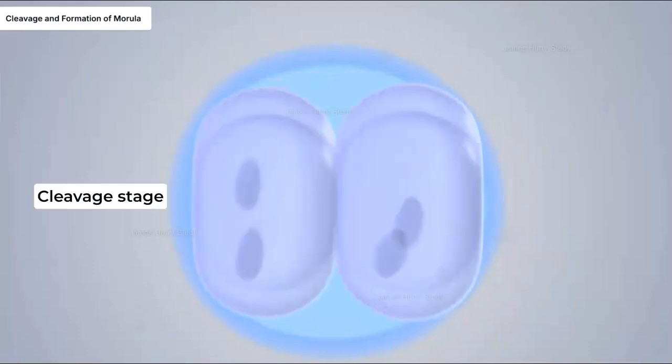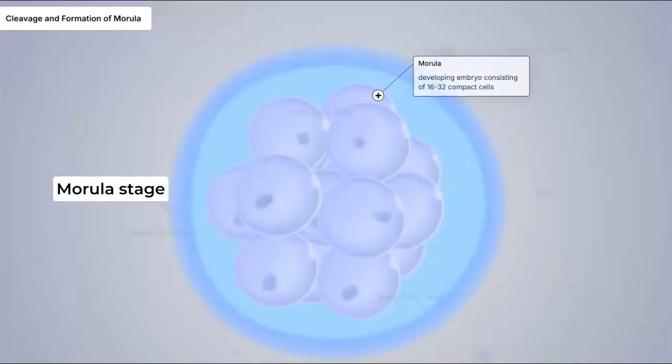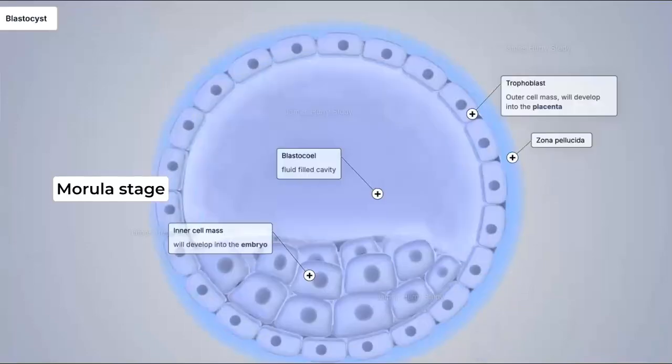Within 24 hours, the single cell zygote begins mitotic division through cleavage, forming multiple cells. The cleavage stage consists of approximately 2 to 8 cells. By day 3, it develops into a morula, and by day 5, it becomes a blastocyst.